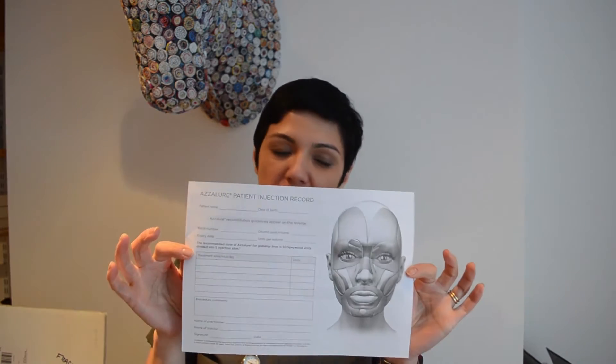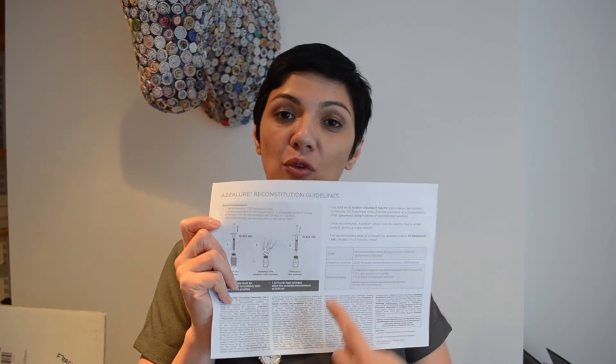So what you get in your pre-injection training pack is you'll have two of these. These are your injection record sheets. So you can see here is reconstitute with 0.63 ml.